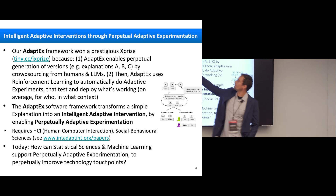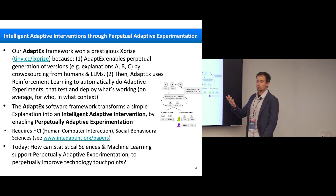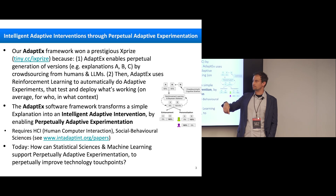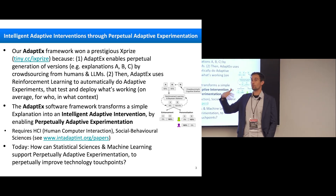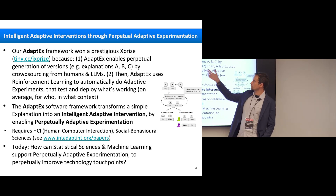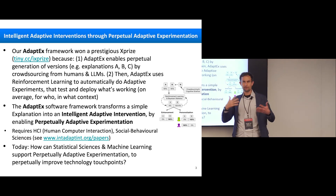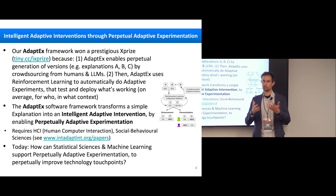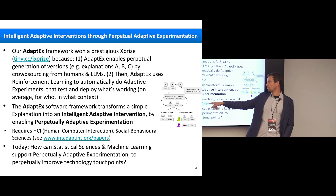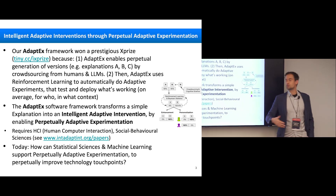My lab transforms technology touch points — parts of a website or a text message — into intelligent adaptive interventions using our AdaptTech software framework, which won a prestigious X Prize. AdaptTech enables perpetual generation of versions (e.g., explanations A, B, C) by crowdsourcing from humans and large language models, then uses reinforcement learning algorithms to automatically run adaptive experiments — testing and deploying what's working on average, for whom, and in what context.